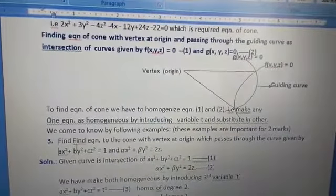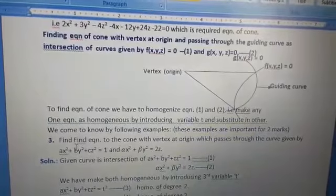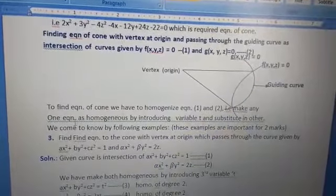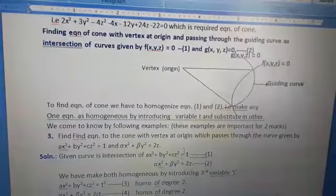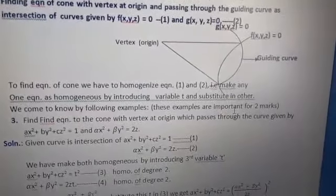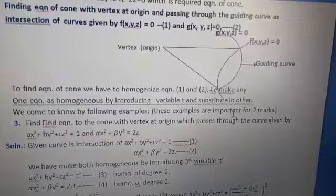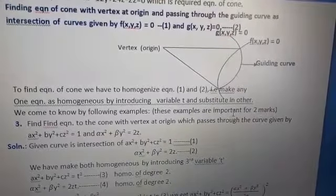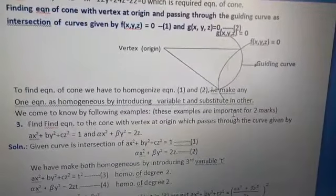Find equation to the cone with vertex at origin which passes through the curve given by ax² + by² + cz² = 1, and αx² + βy² = 2z.